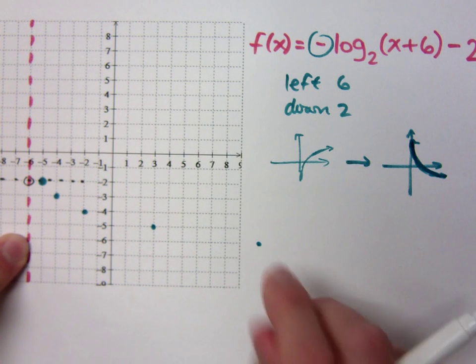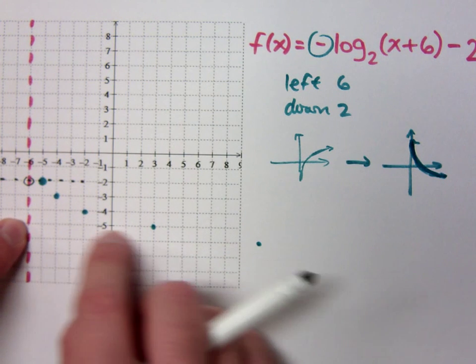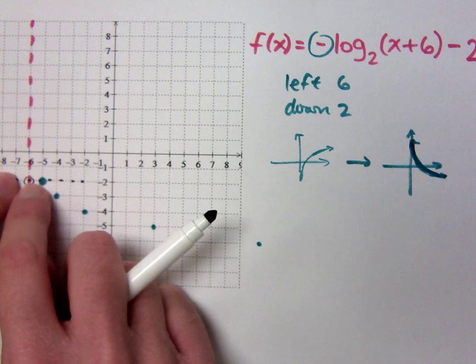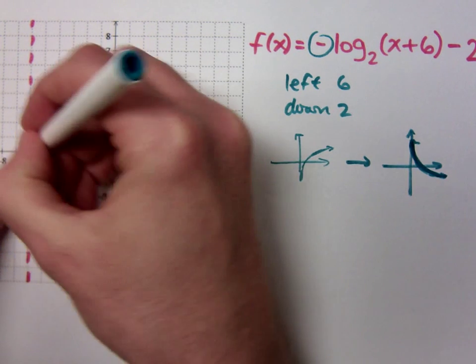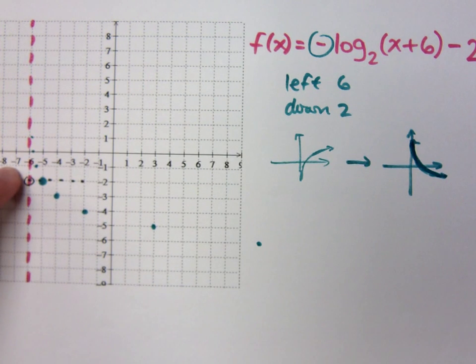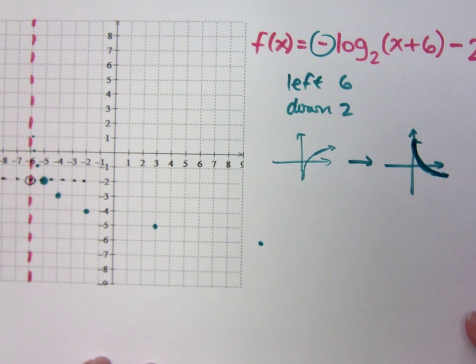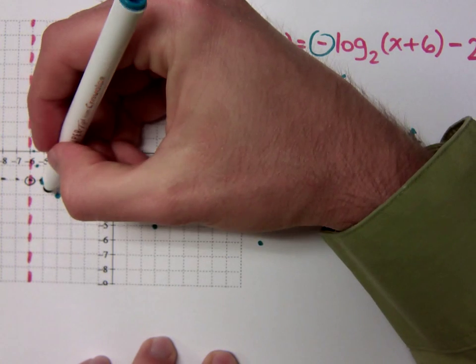But as I go up, this is 16. This distance here is 16. What is this distance? Eight, four, two, one. One half, one fourth, one eighth. So you see that? Once you get this one point and you know the base, it's either multiplying or dividing by that, and you get the appropriate values.